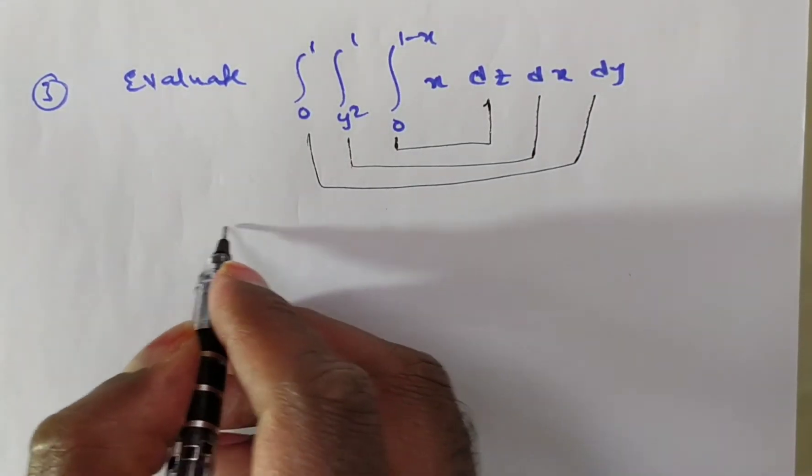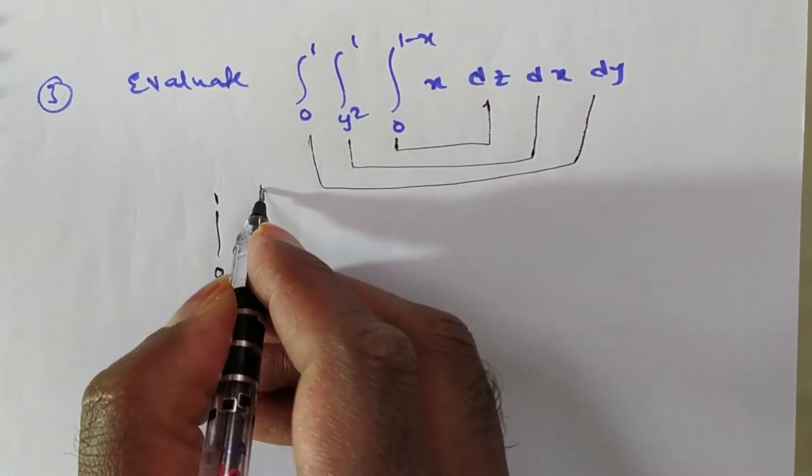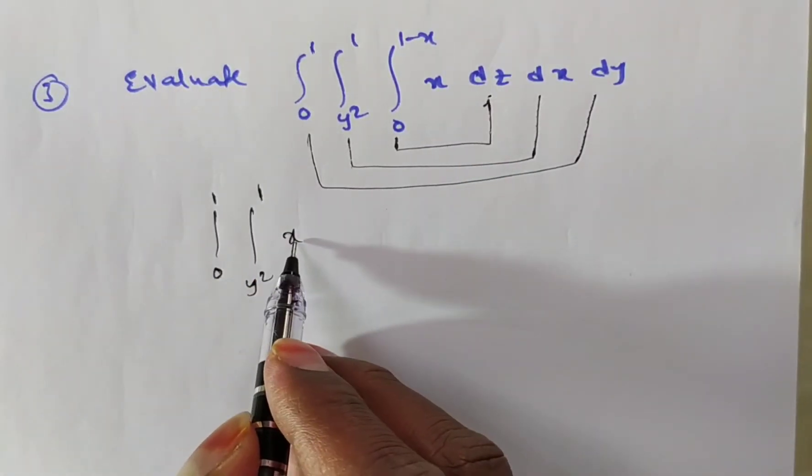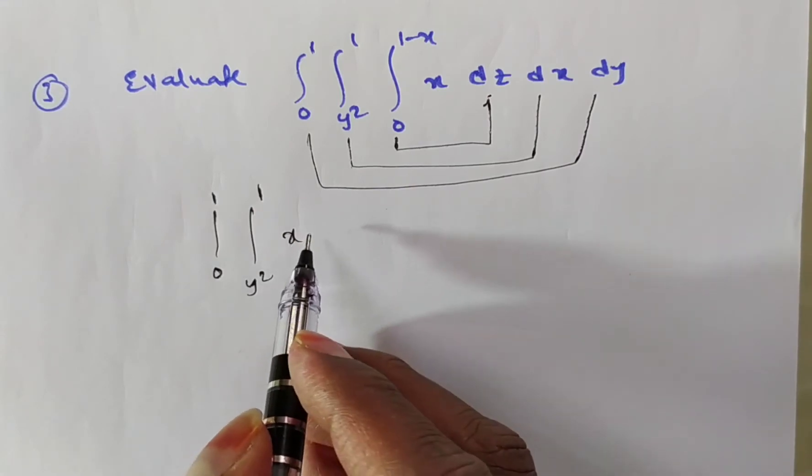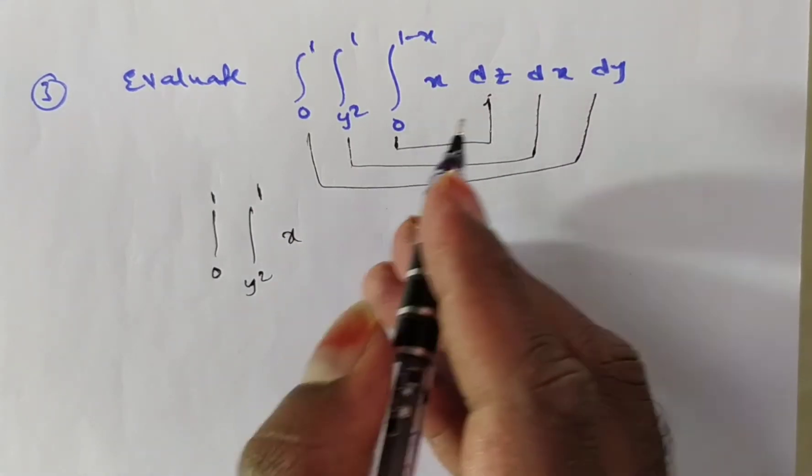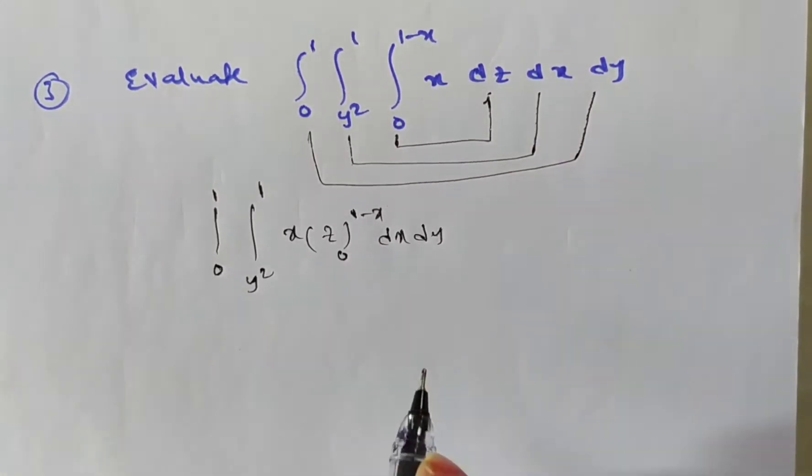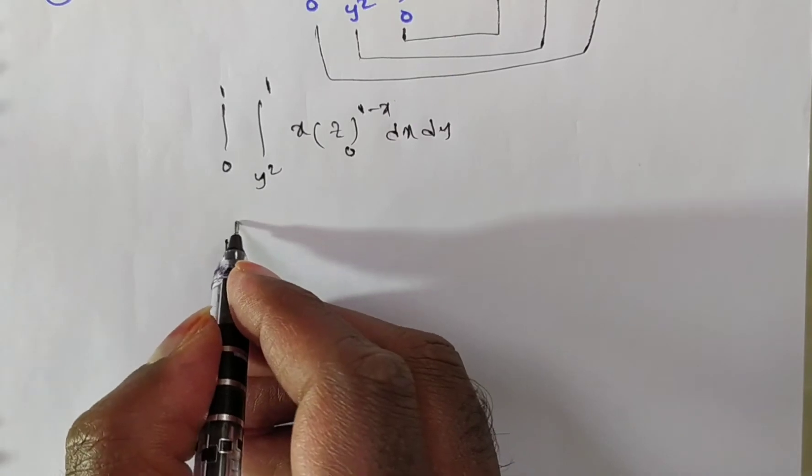So integral 0 to 1, integral y square to 1. Now x is, with respect to z we are doing, so x is independent of z. So keep x as x only. Now x into 1 you can say dz is nothing but z. Limits from 0 to 1 minus x into dx dy.